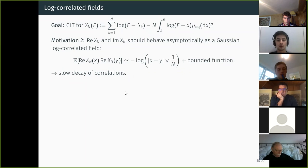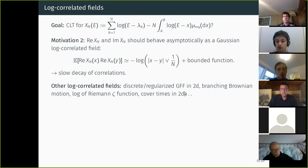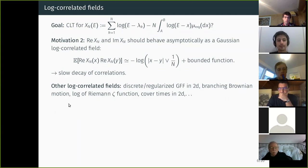Log-correlated fields satisfying this property appear in many models: the Gaussian free field in dimension 2 (continuous, regularized, or discrete), branching Brownian motion and branching random walk, the logarithm of the Riemann zeta function, and cover times in dimension 2.